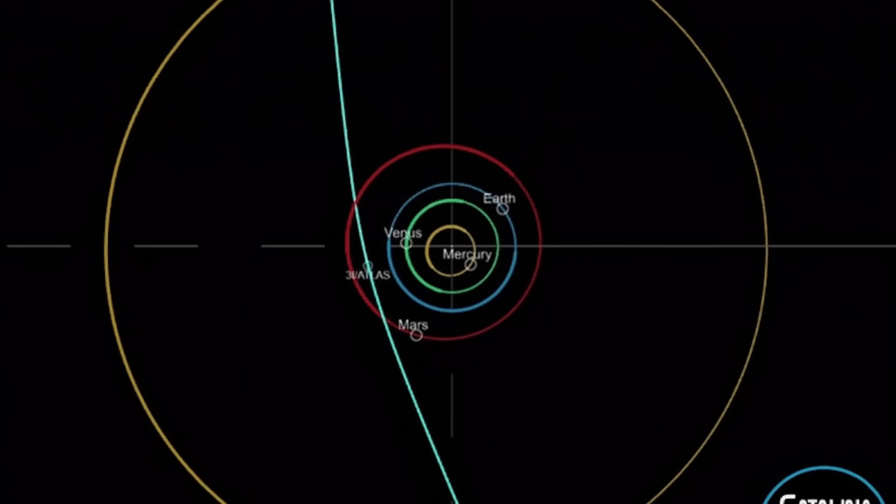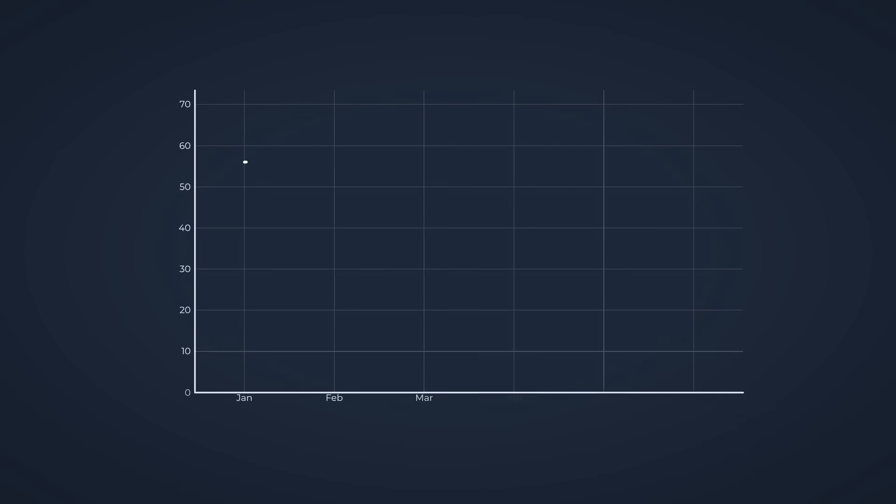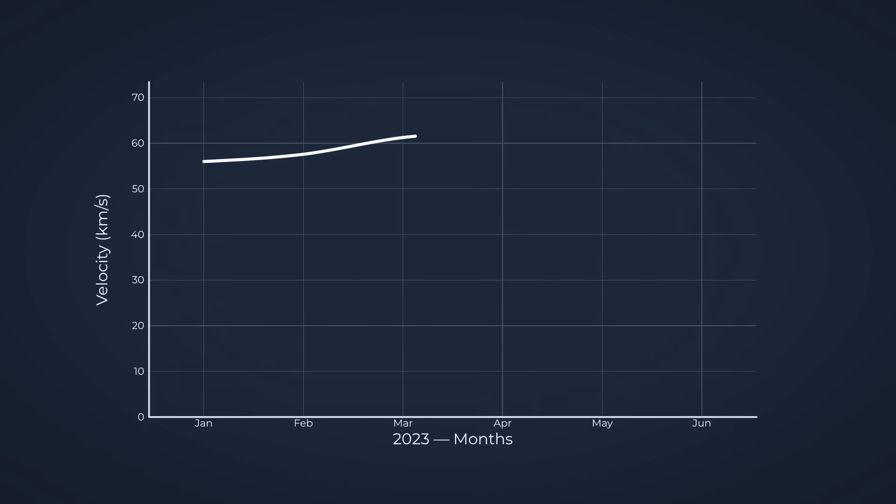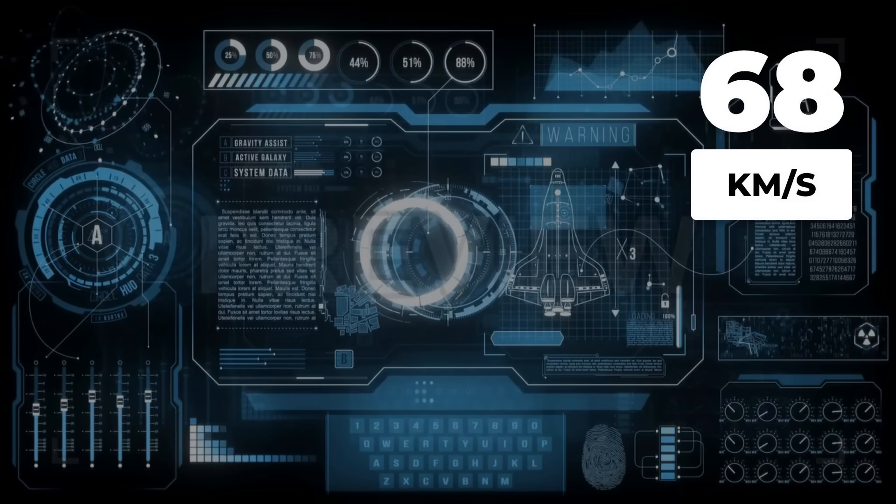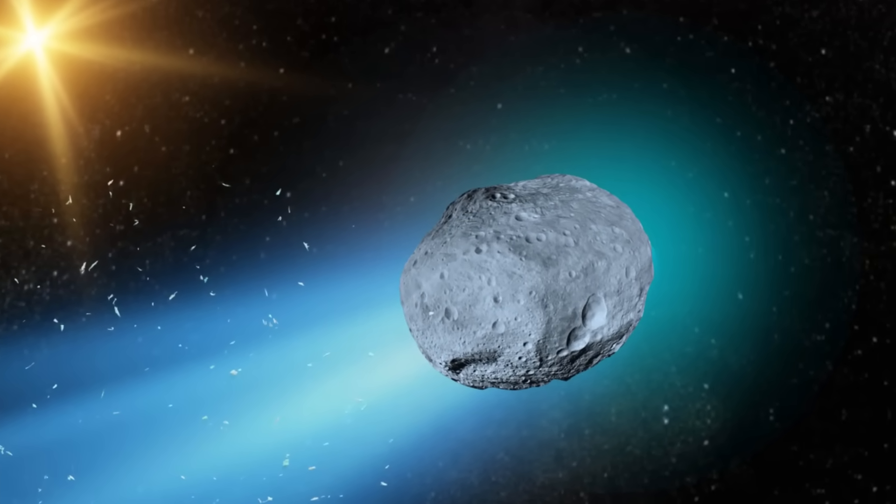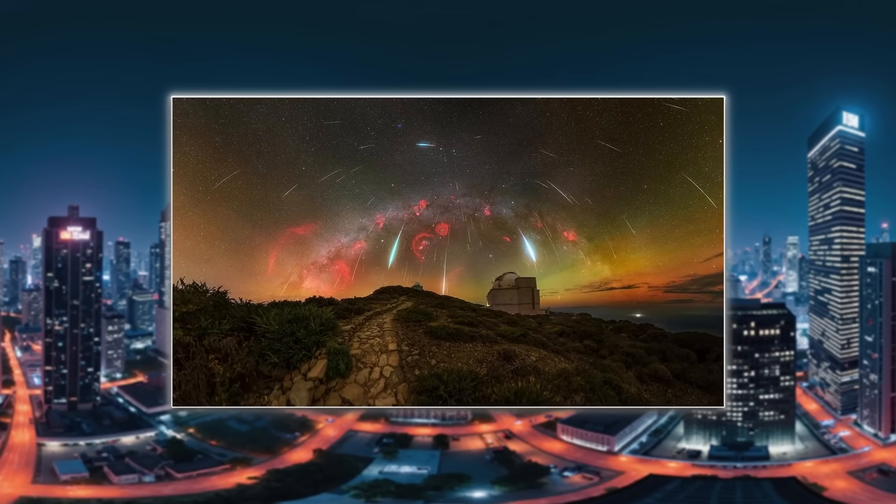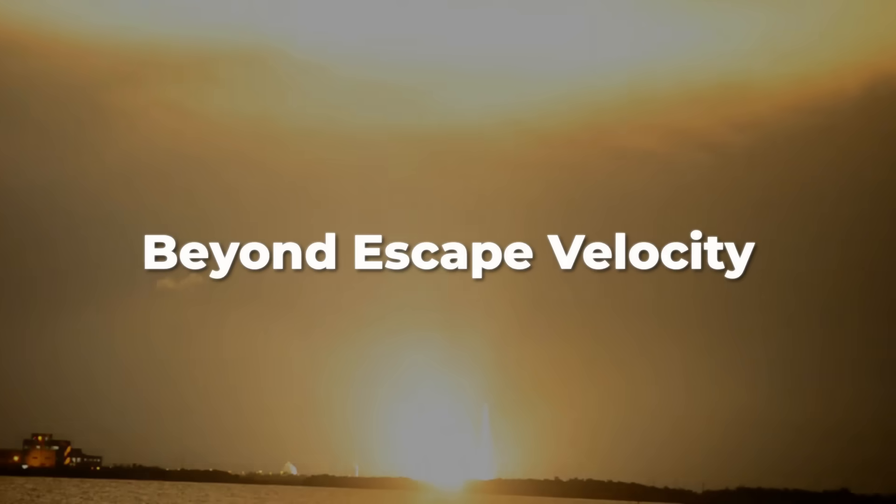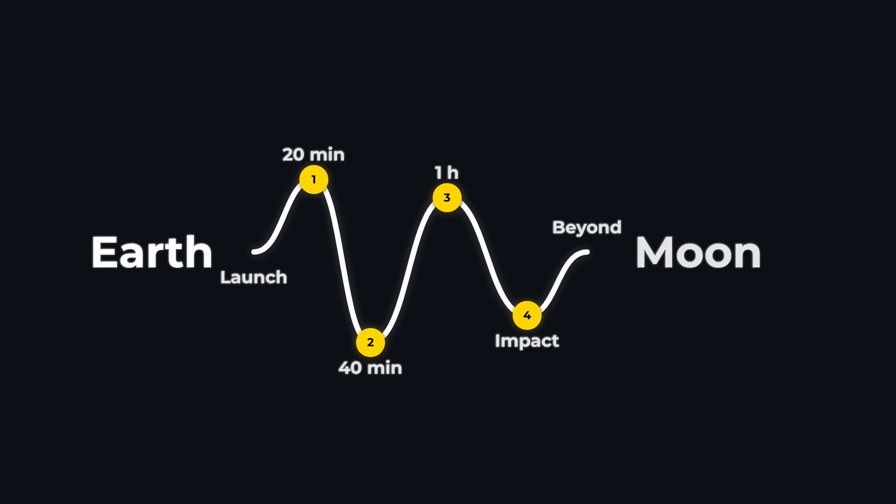The numbers alone tell a story of relentless acceleration. When first clocked by the Atlas survey in early July, its velocity was already an impressive 58 kilometers per second. Now, as it plunges ever deeper toward the Sun, that speed climbs steadily, on track to reach nearly 68 kilometers per second at perihelion. Try to picture that: a chunk of interstellar debris, possibly as wide as a medium-sized city, hurtling through the solar system faster than any spacecraft ever built. At these rates, it covers the distance from Earth to the Moon in just over an hour.